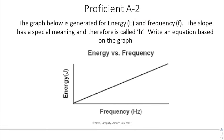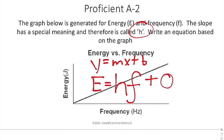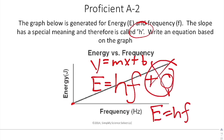The graph below is generated for E as energy and F as frequency. The slope has a special meaning and is therefore called H. Write an equation based on this graph. I can start off with Y equals MX plus B because this is a straight line. Instead of Y, I write E. The slope is a special value called H. Instead of X, I put F. Then I can put plus zero. The reason why I put plus zero is my Y intercept is zero. Sometimes when I have a plus zero, you can just leave it off. And we say E equals HF, which is once again another formula from your formula chart.